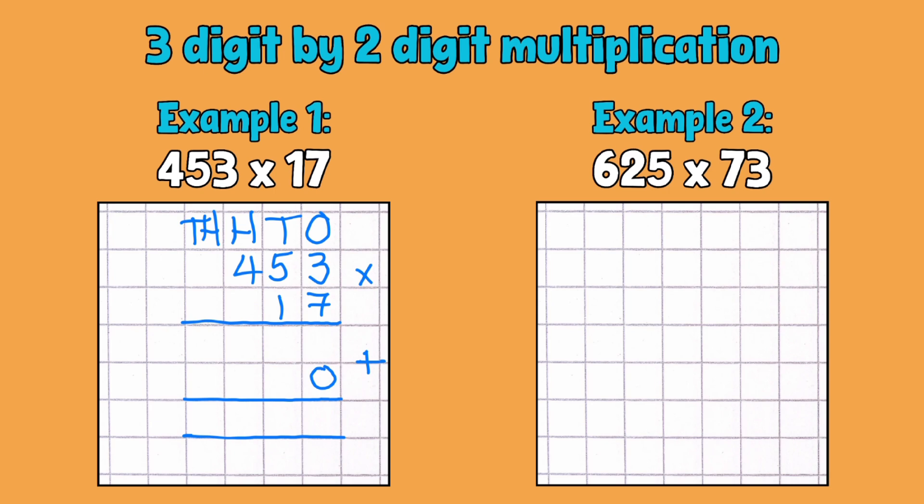The reason that we're going to do that is that we're going to partition 17 into 10 and 7. So we're going to make 453 seven times larger on our second line, and then we're going to make 453 ten times larger on our second line there. And then we're going to add those back together at the end so that we're partitioning and then regrouping and bringing it back together.